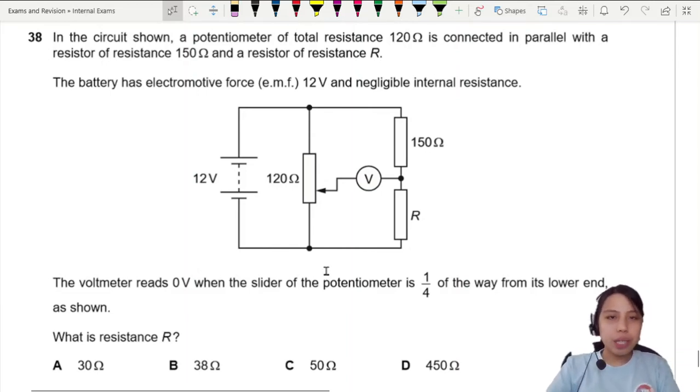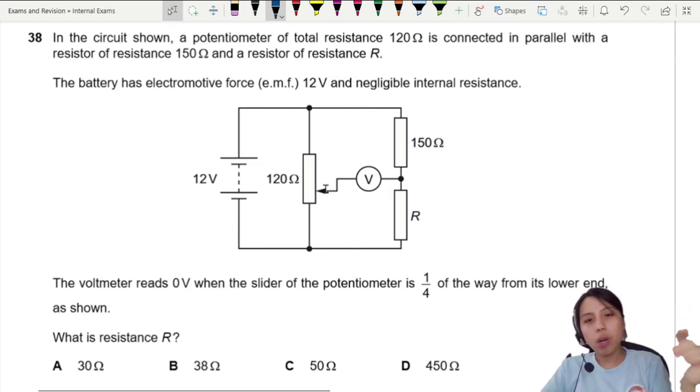In the circuit shown, a potentiometer of total resistance 120Ω is connected in parallel with other resistors. When you see this arrow thing, that means this jockey, as they call it, can move around and poke here and there, affecting the ratio of resistance of this section.